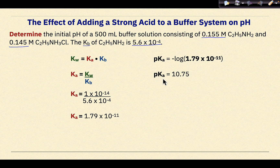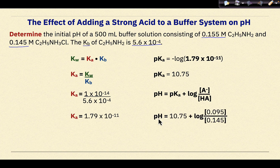We use the pKa value of 10.75 in the Henderson-Hasselbalch equation and substitute in the values from the stimulus. pH equals 10.75 plus the log of the concentration of the weak base (0.095) divided by the weak acid (0.145). The calculated pH is 10.78.